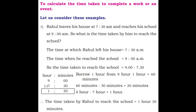First one: Rahul leaves his house at 7:30 AM and reaches his school at 9 AM. What is the time taken by him to reach the school? The time at which Rahul left his house is 7:30 AM. The time when he reached the school is 9 AM. So, the time taken to reach the school is equal to 9 AM minus 7:30 AM.